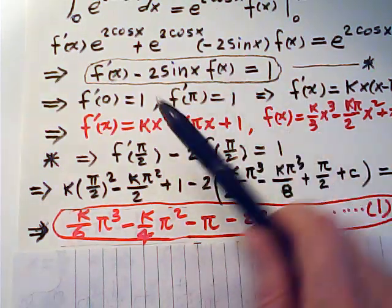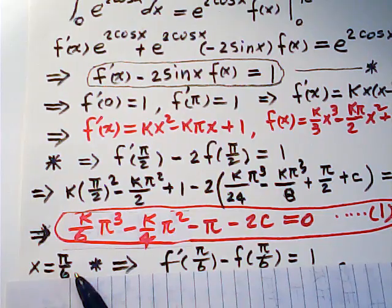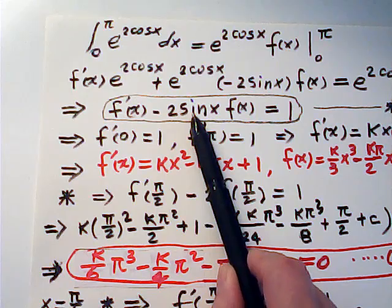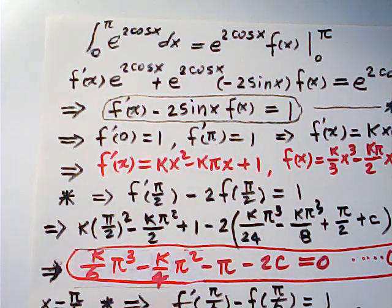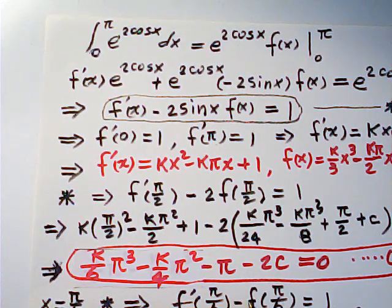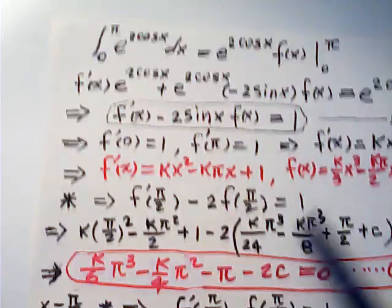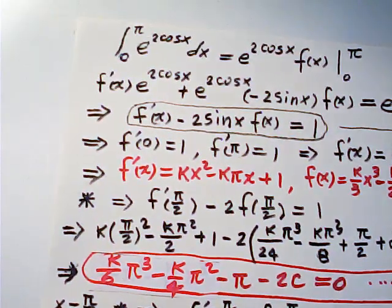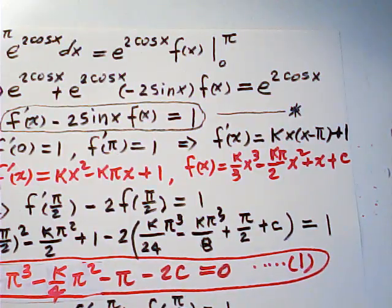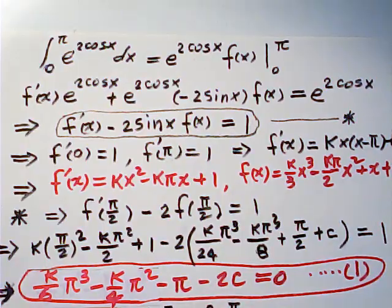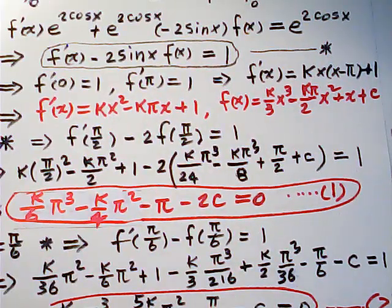Then we do the same thing by choosing value of x for pi over 6 into this equation. Pi over 6, sin pi over 6 is one half. Therefore, f prime of pi over 6 minus f of pi over 6 is equal to one, which is coming from this equation. Then we plug pi over 6 into f(x). Then we get this equation. And then we simplify, then we get this equation.